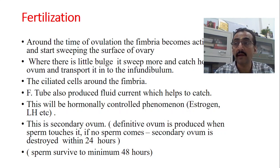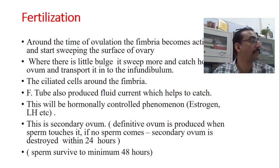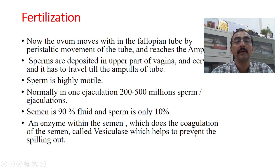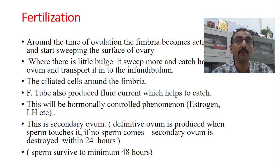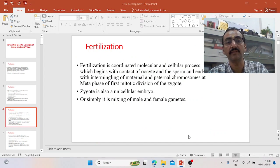If no sperm touches the secondary oocyte — when there is no pregnancy — the secondary oocyte will be destroyed within 24 hours. Sperm, on the other hand, can survive for a minimum of 48 hours in the female genital tract. But that is not the case with the ovum, which will only survive for 24 hours if there is no fertilization. This concludes the first part of fertilization; in the next class we will see the next part. Thank you very much.